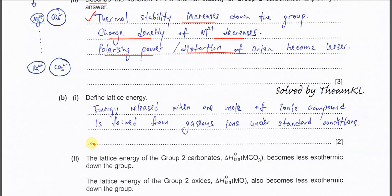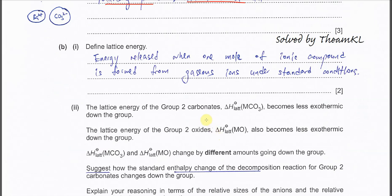Part B1: define lattice energy. It is the energy released when one mole of ionic compound is formed from its gaseous ions under standard conditions. This is the standard definition.